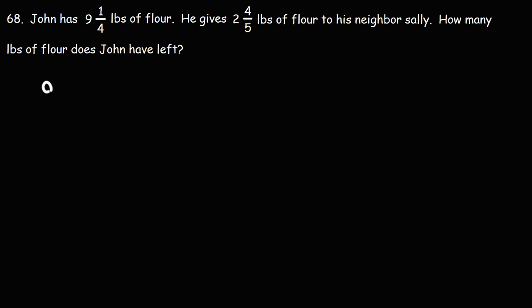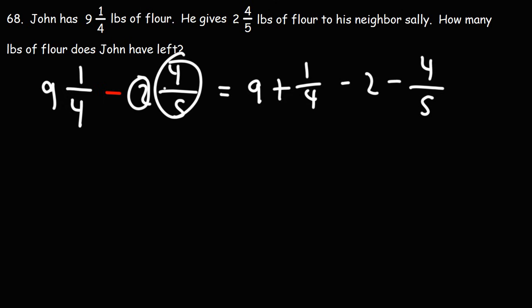So we're subtracting two mixed numbers. We have nine and one-fourth, and we're going to subtract it by two and four-fifths. Let's break up nine and one-fourth into nine plus one over four, and then we're going to subtract it by two and by four over five. We need to distribute the negative to the two and the four-fifths.